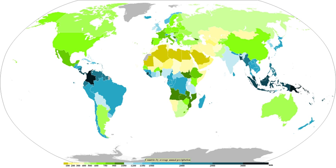Windward sides face the east-to-northeast trade winds and receive much more rainfall. Leeward sides are drier and sunnier, with less rain and less cloud cover. In South America, the Andes mountain range blocks Pacific moisture, resulting in a desert-like climate just downwind across western Argentina. The Sierra Nevada range creates the same effect in North America, forming the Great Basin and Mojave Deserts.